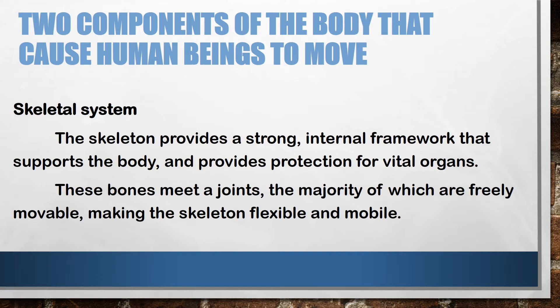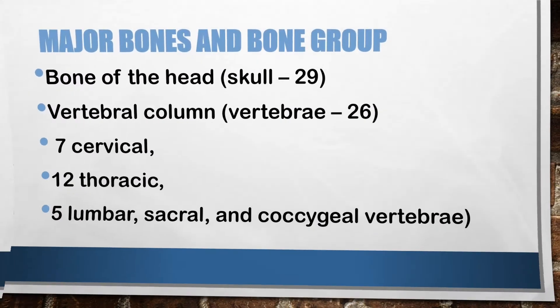First, the skeletal system. The skeleton provides a strong internal framework that supports the body and provides protection for vital organs. These bones meet at the joints, the majority of which are freely movable, making the skeleton flexible and mobile. The appendicular skeleton and the axial skeleton identify the parts of the body.